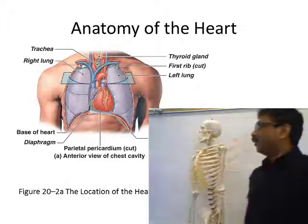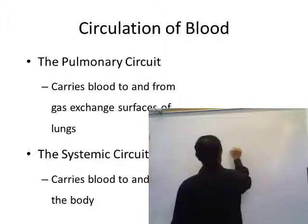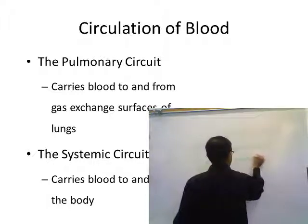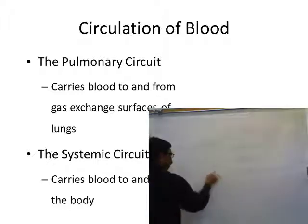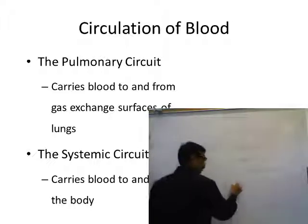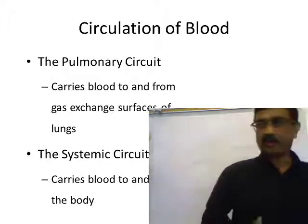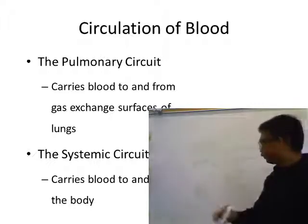In the human body we have different types of circulation. Number one: pulmonary circulation. Number two: systemic circulation. Number three: hepatic portal circulation. These three circulations are present in adults. One circulation that is only present in the fetus is called fetal circulation, between the mother and the fetus when the fetus is in the mother's body.